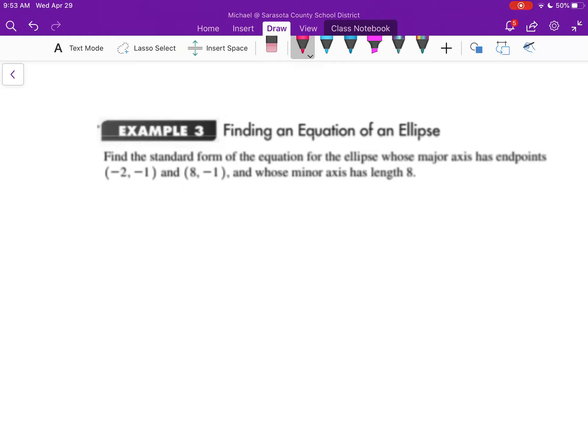So let's take a look. It says find the standard form of an equation, and the major axis has endpoints at negative 2, negative 1, and 8, negative 1. What that tells me is that this is a vertex point, and this is a vertex point as well.